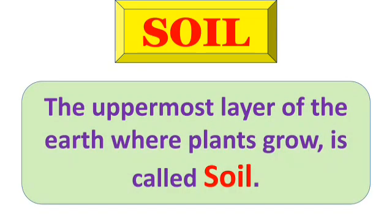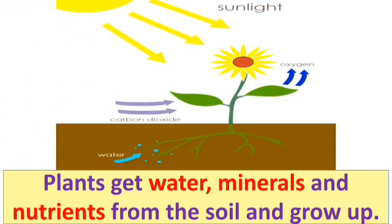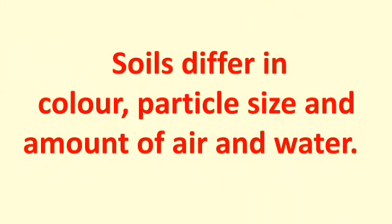So tell me, what is soil? The uppermost layer of the earth where plants grow is called soil. Plants get water, minerals and nutrients from the soil and they grow up. Soil differs in color, particle size and amount of air and water.